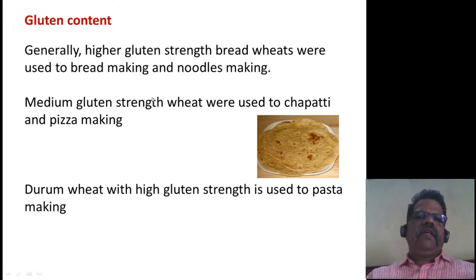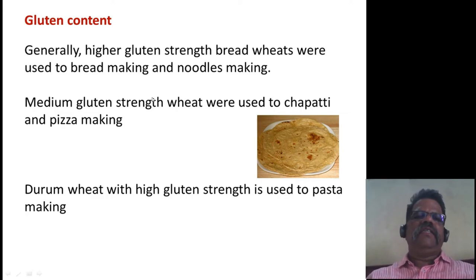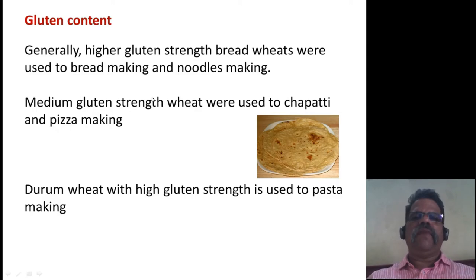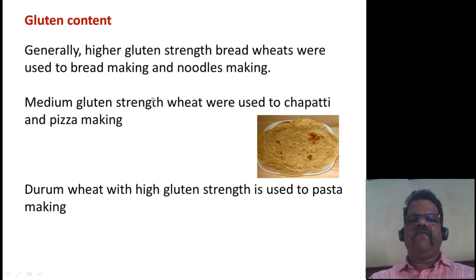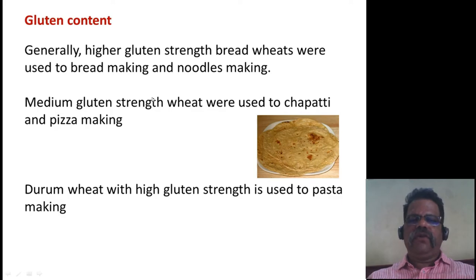Gluten content can be measured using different rheological instruments. Generally, if higher gluten strength wheat is present, that is good for bread making and noodle making. If wheat contains medium gluten strength, that is good for chapati making, pizza making, or flat bread making. If durum wheat contains higher gluten strength, that is used for pasta making.